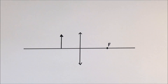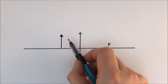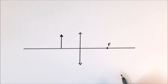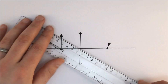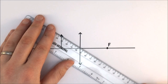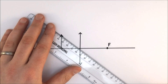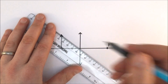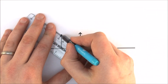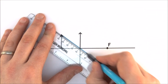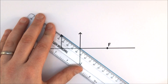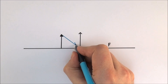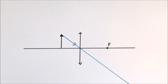The first ray I'm going to draw goes from the top of the object through the centre of the lens, and then it just keeps going in a straight line. We assume this because it's a nice thin lens, and at the centre you've got parallel sides so the light comes out in a parallel direction. That's the first ray of light, drawn with a ruler.